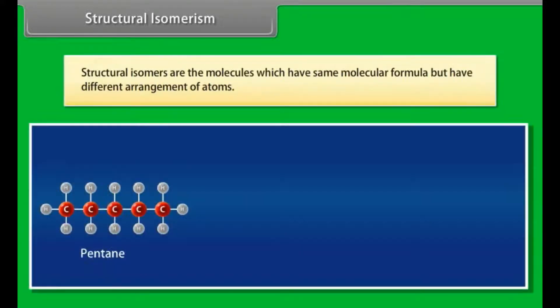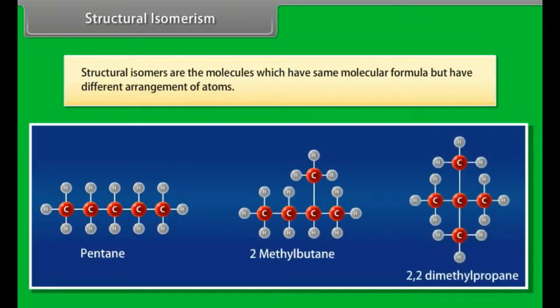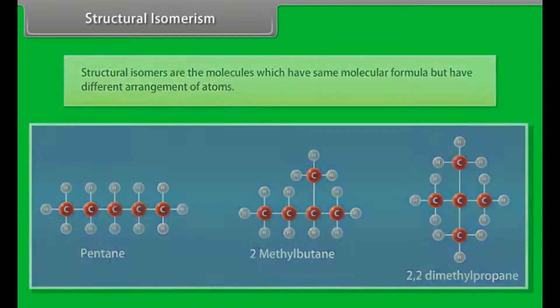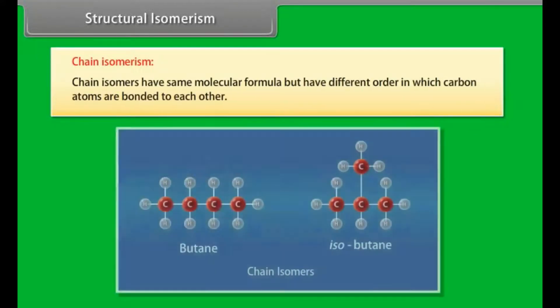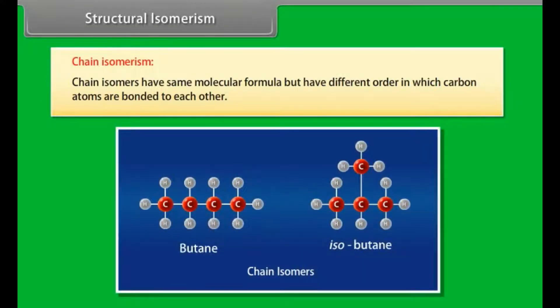Structural isomerism. Structural isomers are molecules which have the same molecular formula but have different arrangement of atoms. Chain isomers have same molecular formula but have different order in which carbon atoms are bonded to each other.